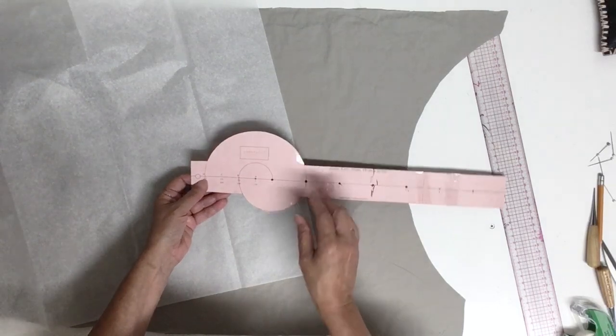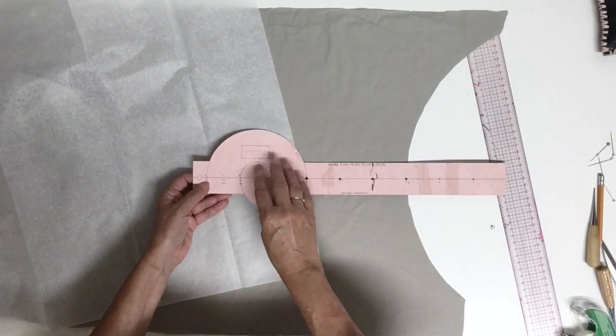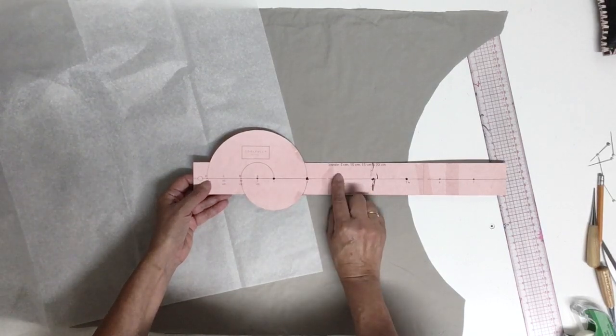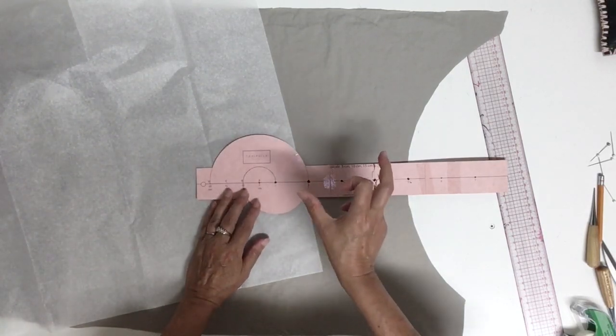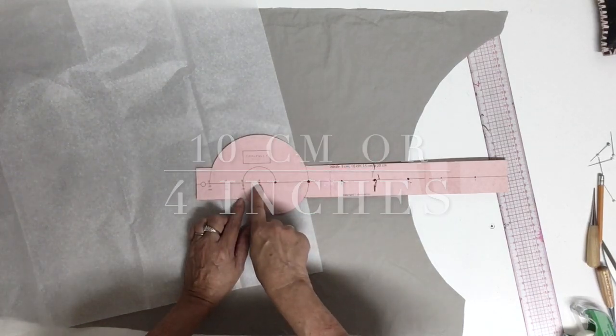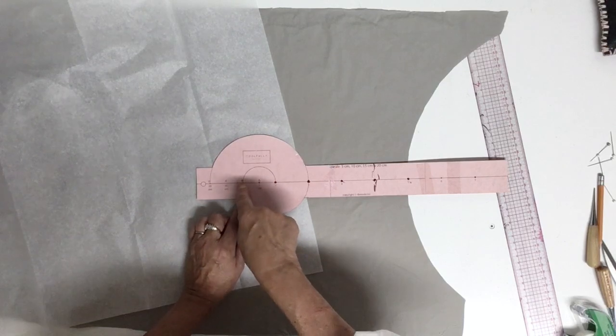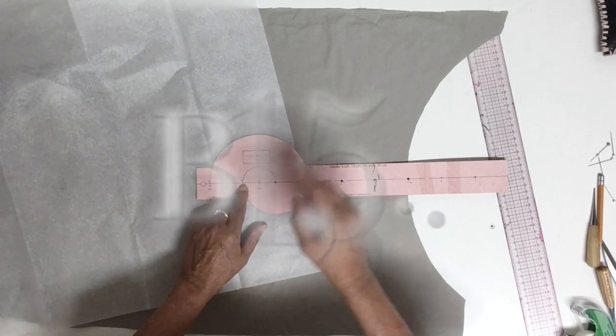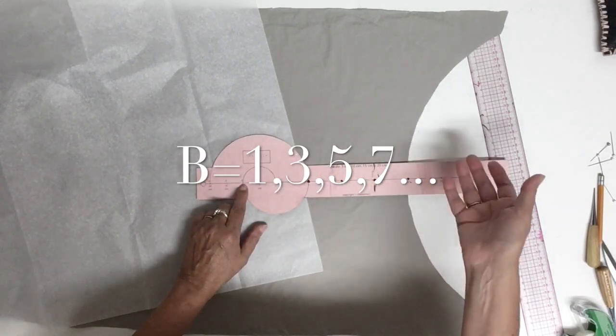For today's example I decided to use the widest spiral tool, so two inches or five centimeters, and I want my spiral width to be 10 cm. So I'm not going to use point A, I'll use point B to pivot, and I'm going to skip one number out of two, so one, three, five and seven.